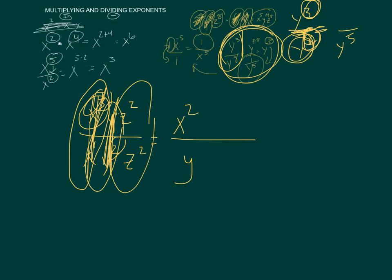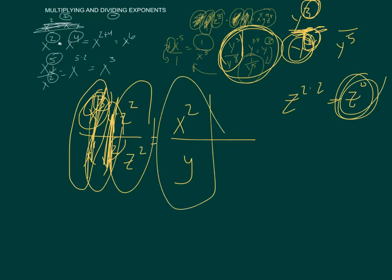Last one. We've got z squared and z squared. Guess what? Those are the same. What's 2 minus 2? So, it'd be like z 2 minus 2. 2 minus 2 is 0, so it'd be z to the 0. What is anything to the 0 power? 1. So, anything times 1 would be the same, so there's your final answer.